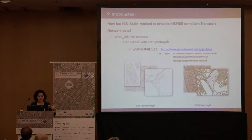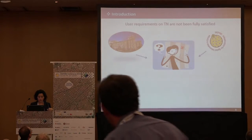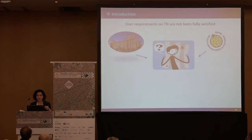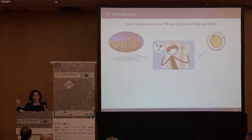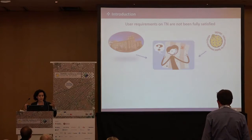These are the layers that we are able to provide with the true portrayal. By default it's INSPIRE portrayal, but the user can choose the cartography or the national portrayal. This is the state of the play, and we think that user requirements on transport maybe are not being fully satisfied. Because on one hand, the INSPIRE-compliant answer is not quite rich, and on the other hand we have a lot of information but it is split in different projects.